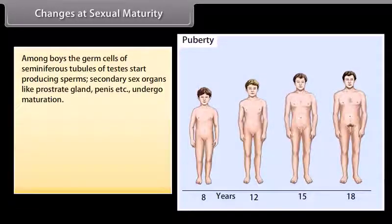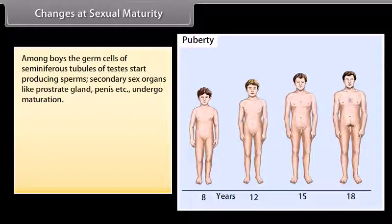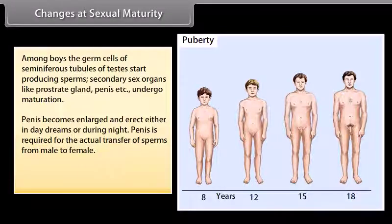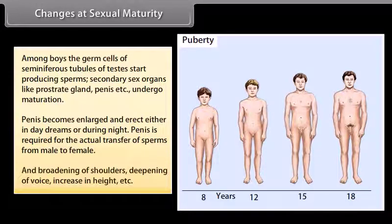Among boys: the germ cells of seminiferous tubules of testes start producing sperms; secondary sex organs like prostate gland and penis undergo maturation; penis becomes enlarged and erect during daydreams or at night; broadening of shoulders, deepening of voice, and increase in height.